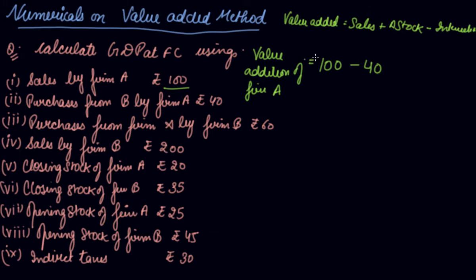Then, change in stock. Your change in stock means your closing stock minus your opening stock. Closing stock for firm A was 20. Opening stock of firm A was 25. So by solving this, we get Rs. 55 lakhs as these are in lakhs.